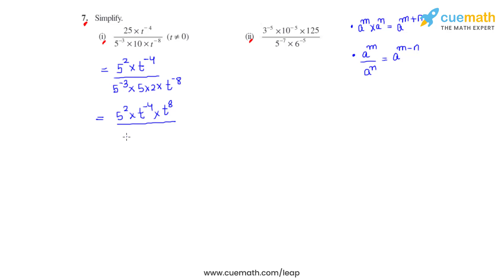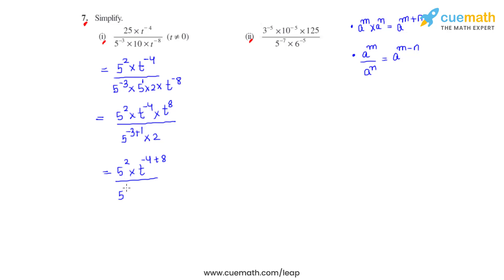This whole is divided by 5 raised to negative 3. As the power of 5 here is 1 and the bases are the same, we add the powers, giving us 5 raised to negative 3 plus 1 times 2. So that gives us 5 raised to negative 4 times t raised to negative 4 plus 8. As the bases are the same and in multiplication, the powers get added.